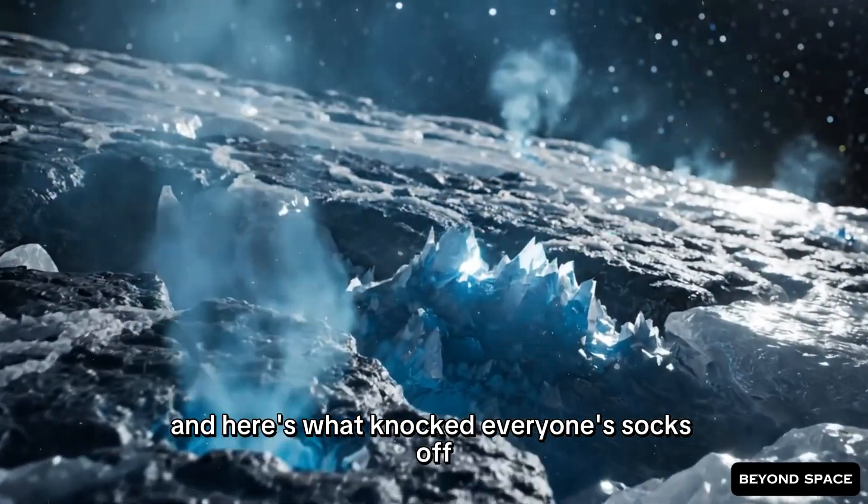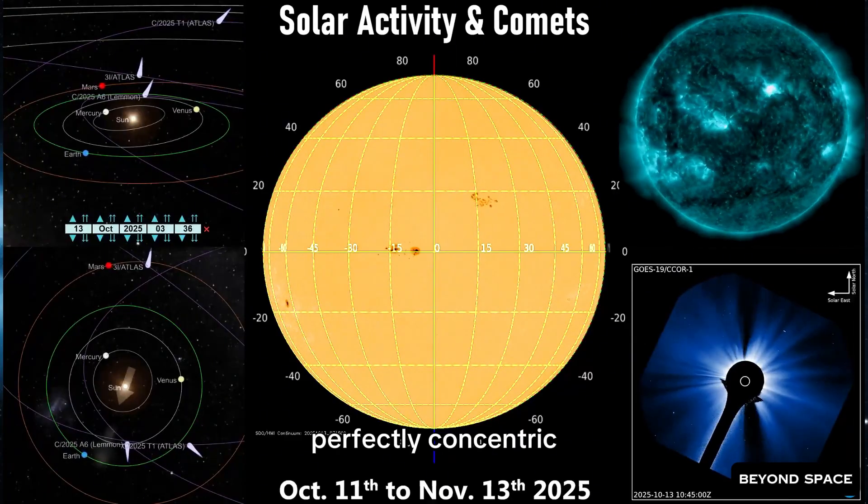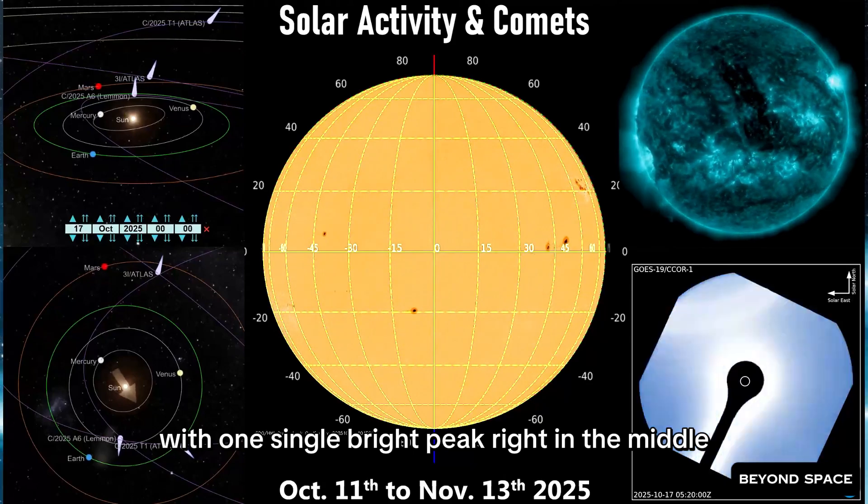Each ring represents how bright different parts of the comet are as you move away from the center. And here's what knocked everyone's socks off. The rings are perfectly circular. Perfectly concentric. With one single bright peak right in the middle.